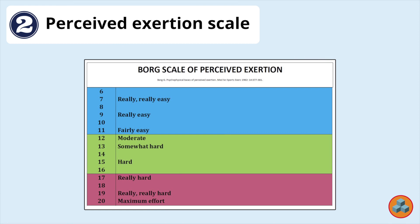Option 2: Perceived Exertion Scale. Patients can utilize the perceived exertion scale, such as Borg's rating of perceived exertion scale, as a subjective means of rating the intensity of exercise. This is particularly useful following cardiac transplantation, since a transplanted heart fails to respond normally to sympathetic nervous stimulation, resulting in an abnormal heart rate response to exercise.